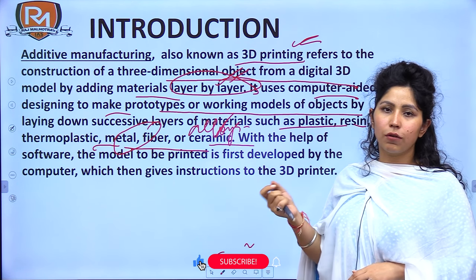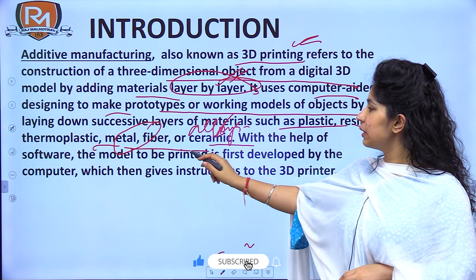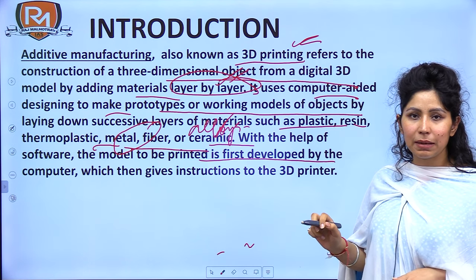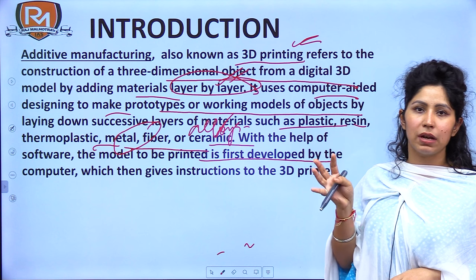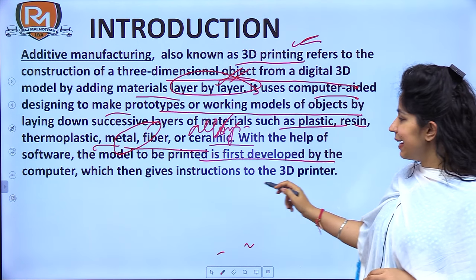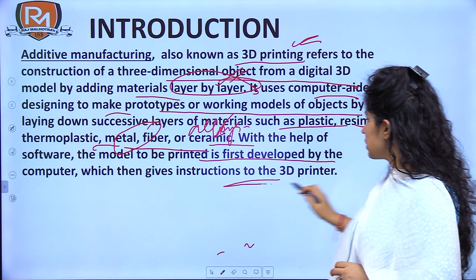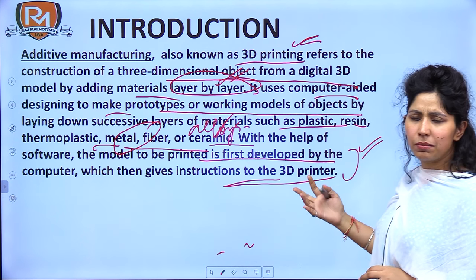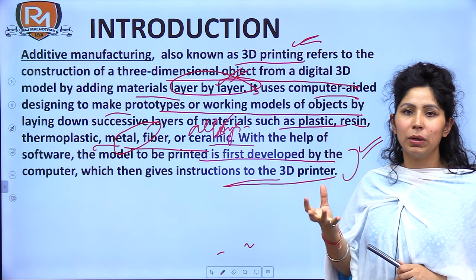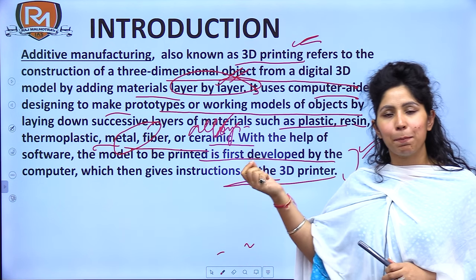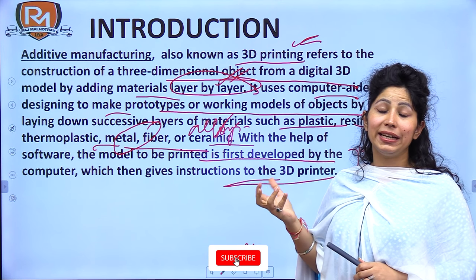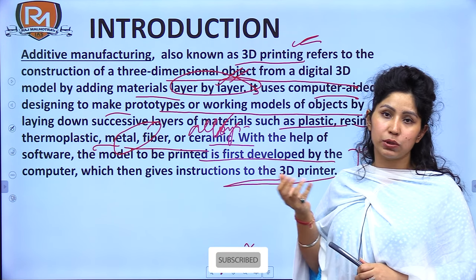With the help of software provided to the computer, the model to be printed is first developed by the computer — it develops a shape and then gives instructions to the 3D printer. It normally works like an inkjet printer. A normal printer gives you a printed image on paper, but a 3D printer gives you real-life objects.